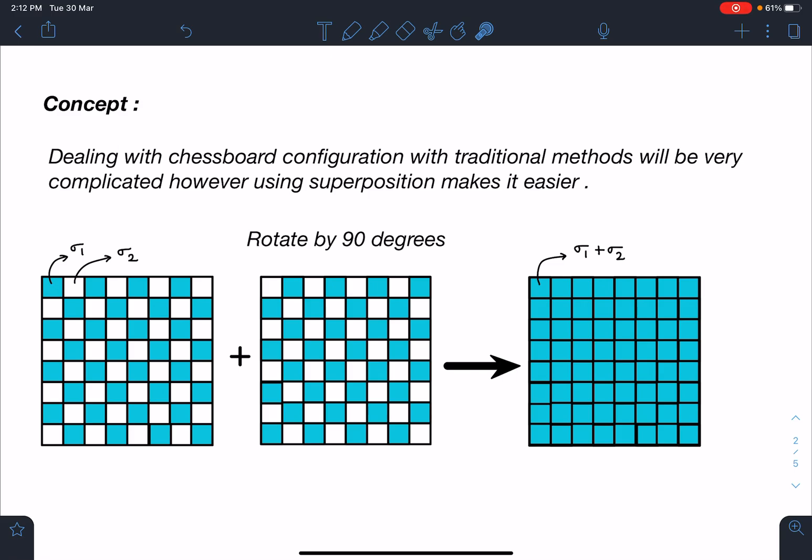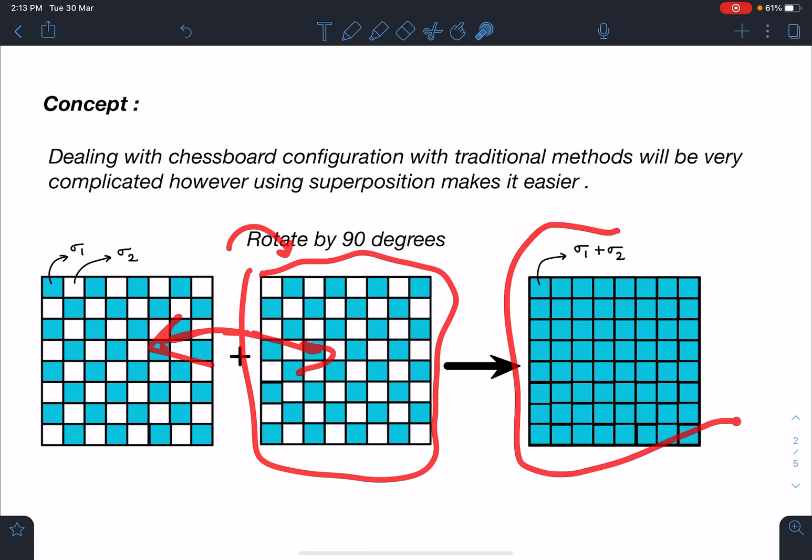Dealing with chessboard configuration with traditional methods will be very complicated. However, using superposition makes it really easy. If you see this is the chessboard, and if you rotate it by an angle of 90 degrees, we get this configuration. And if you join these two, you get a plane sheet having charge density of σ₁ plus σ₂.